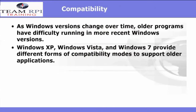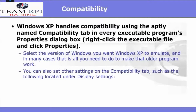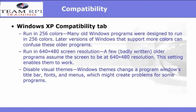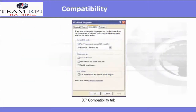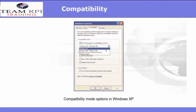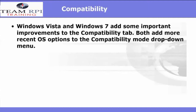As Windows versions have changed over time, some older programs have difficulty running in more recent Windows environments. Windows XP, Windows Vista, and Windows 7 all provide for different forms of compatibility modes to support older applications. In Windows XP, it handles compatibility issues with the Compatibility tab — simply right-click on the executable file and then click Properties. You'll have the option to run in 256 colors, run in 640x480 screen resolution, or disable visual themes. In Windows Vista and Windows 7, you have some other improvements to the Compatibility tab, adding more recent operating system options to the Compatibility mode dropdown menu.